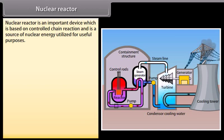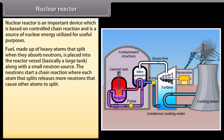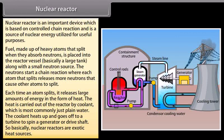Nuclear reactor. Nuclear reactor is an important device which is based on controlled chain reaction and is a source of nuclear energy utilized for useful purposes. Fuel made up of heavy atoms that split when they absorb neutrons is placed into the reactor vessel, basically a large tank, along with a small neutron source. The neutrons start a chain reaction where each atom that splits releases more neutrons that cause other atoms to split. Each time an atom splits, it releases large amount of energy in the form of heat. The heat is carried out of the reactor by coolant, which is most commonly just plain water. The coolant heats up...